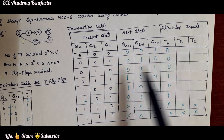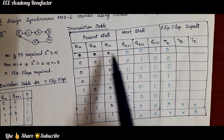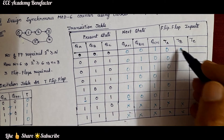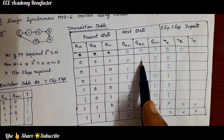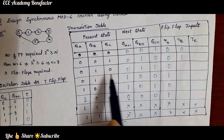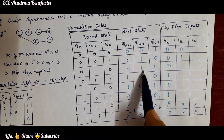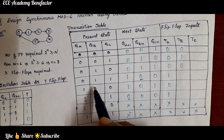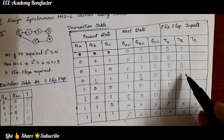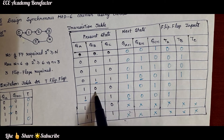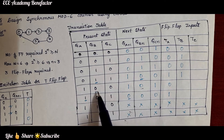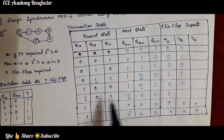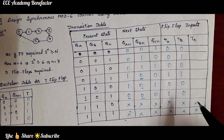Coming to TB, we compare QB and QB+1 for each row. Where QB transitions between 0 and 1 there is toggling and TB is 1; otherwise TB is 0. The TB column is filled for states 0 through 5, with don't cares for states 6 and 7.